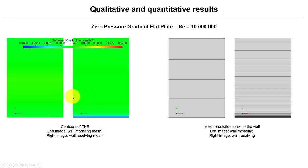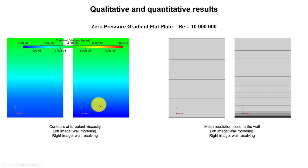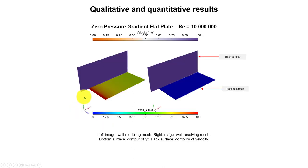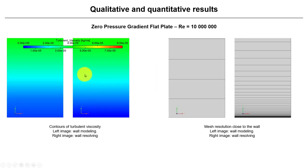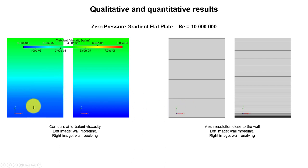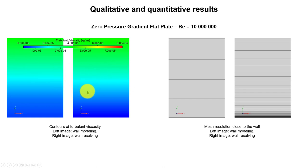Even though we have different values for k and epsilon between the two approaches, the turbulent viscosity computed from these quantities is very similar. Remember that the values are computed at the cell center, and what you see is the interpolated, cell-averaged quantity. Both the wall-modeled and wall-resolved approaches give similar turbulent viscosity profiles.